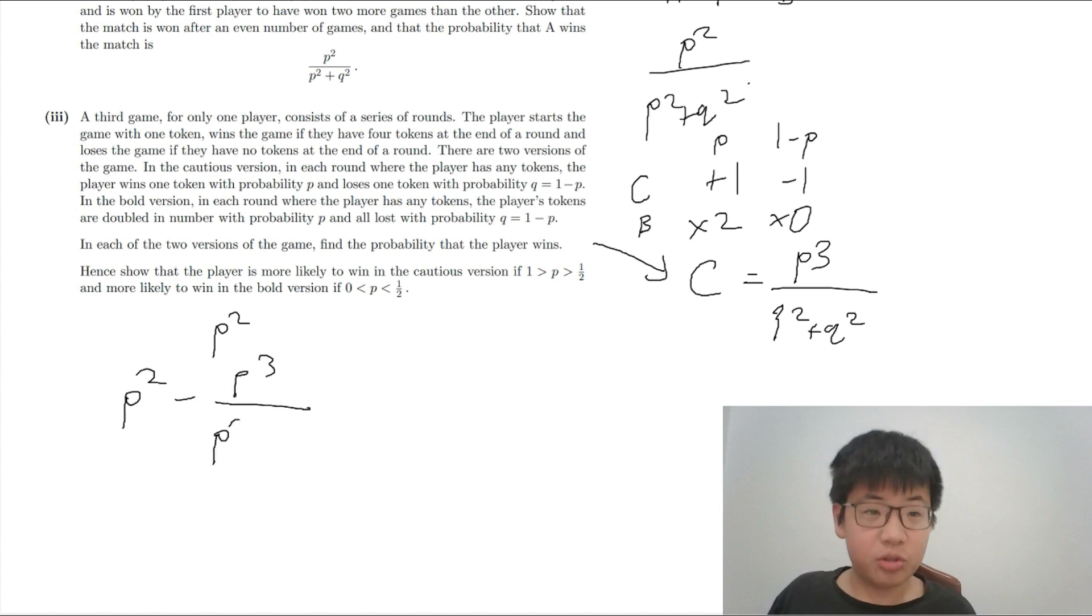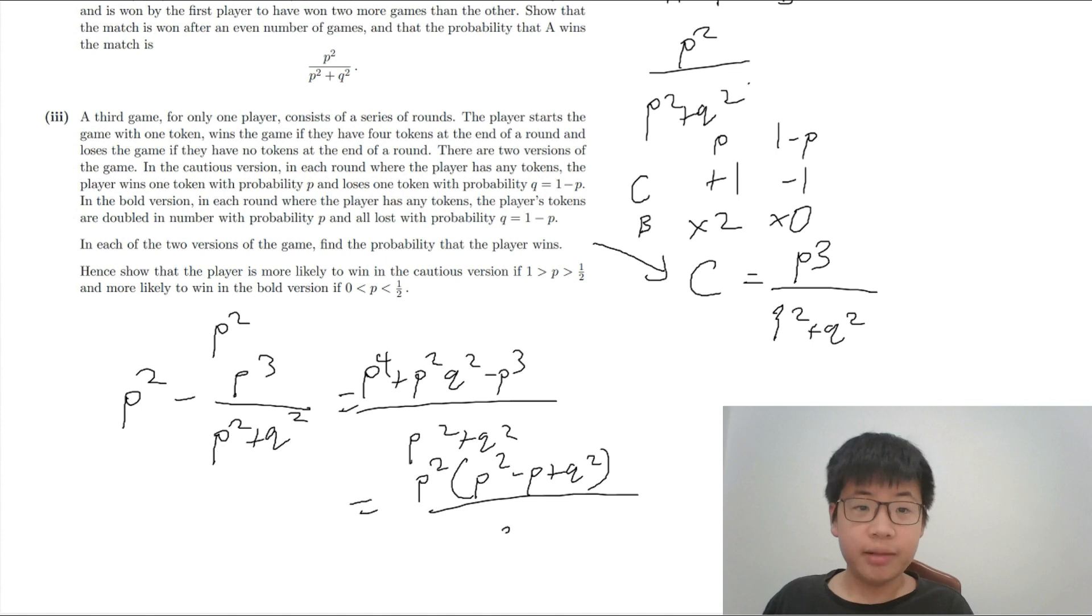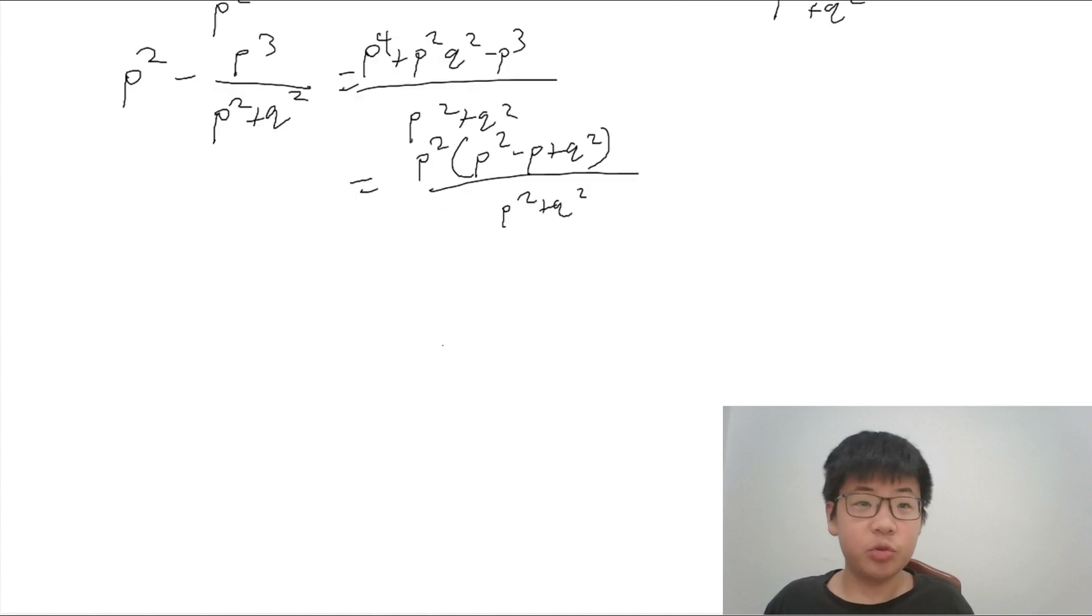So, this means we have to calculate P squared minus P cubed over P squared plus Q squared equals to P4 plus P squared Q squared minus P cubed over P squared plus Q squared. And then, if you calculate this, you will have P squared minus P squared over P squared plus Q squared. And, which, if you do the simplification, you will get P squared 2P minus 1 times P minus 1 over P squared plus Q squared.